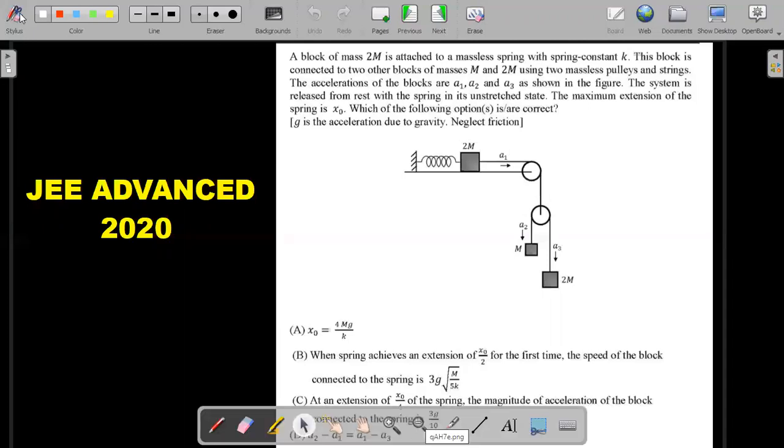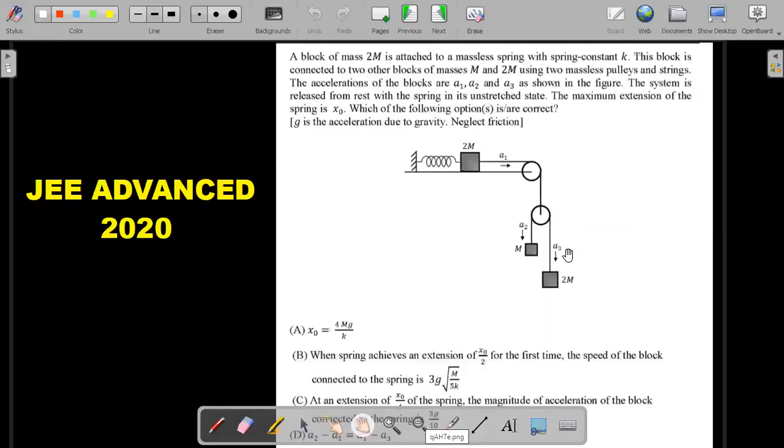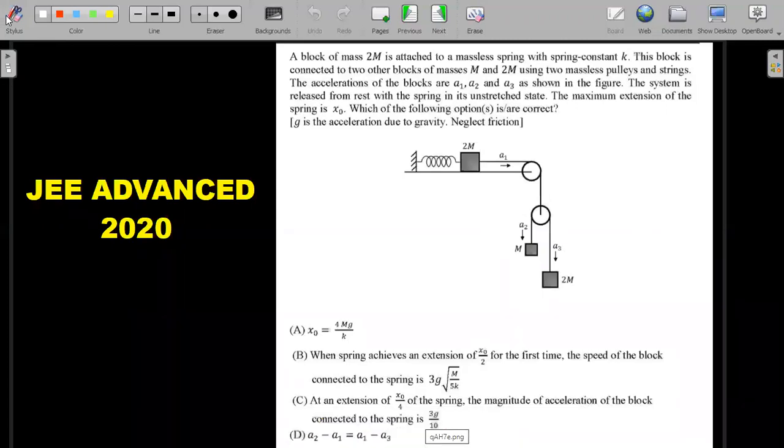So there is a spring block system and along with an Atwood machine, we could call it a double Atwood machine kind of situation. And there's a block of mass 2M here, and this is a mass M and this is 2M. Everything is ideal, no friction, massless pulleys, etc. Spring is also ideal. And system is released from a state of initial rest. And also the spring was initially in unstretched state. You want to give it a try, then pause the video, have a look at the problem, and then try to come back to see the solution.